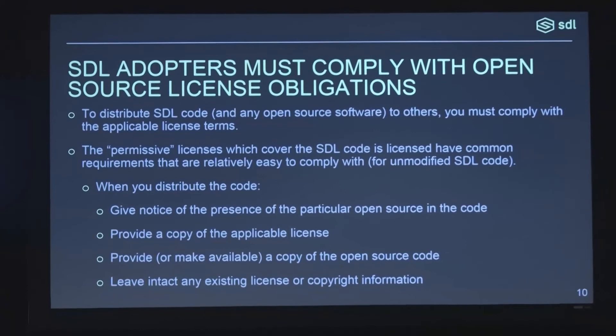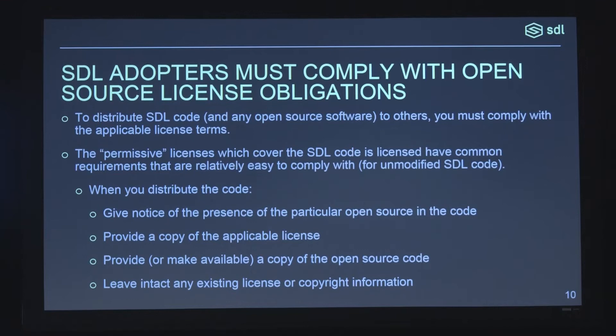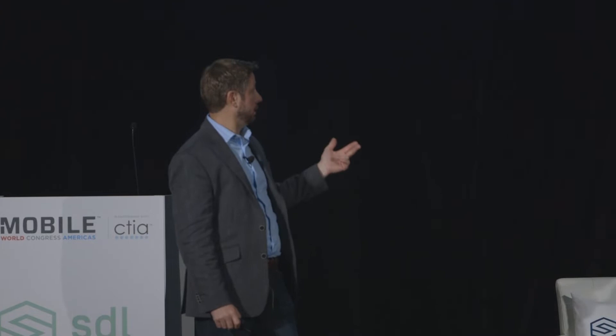The lower bullets represent obligations that almost every license has. You have to tell people you're using SDL open source code, and that code includes code licensed pursuant to a variety of different licenses. You have to physically provide a copy of the licenses — the acronyms I referred to earlier. When you distribute the code, you have to hand over the license. Practically speaking, if you are developing an app, you embed the license in some menu deep in the bowels of the app, just like your iPhone or Android phone. If you're a head unit manufacturer, you'll often embed the license terms somewhere in a menu in the head unit display. If you're an OEM distributing to dealerships, that's a different set of challenges.